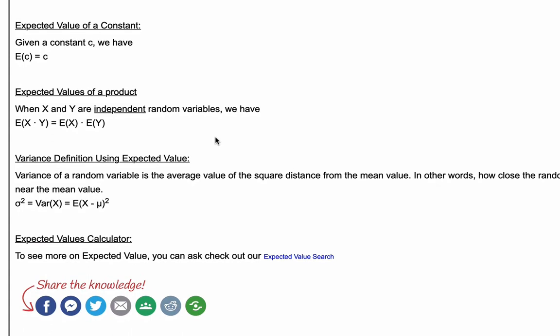Let's move on to the expected value of a constant. Given a constant c, we have the expected value of the constant is just the constant. For instance, E(6) is just 6.